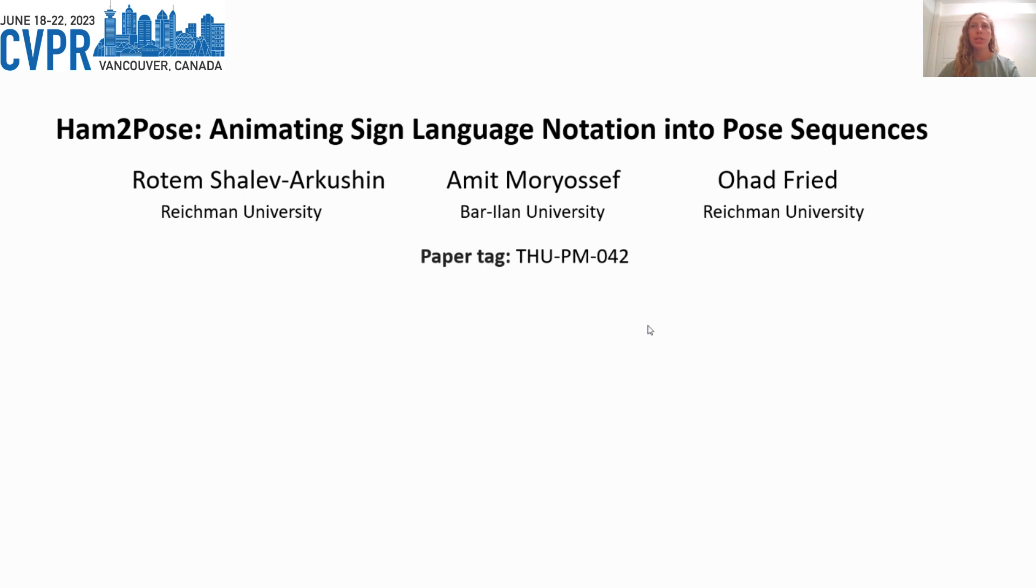HamNoSys is a generic lexical notation that allows describing any sign in any language by glyphs that describe the movement. There are glyphs that describe the hand shape, location, orientation, the movement itself, and more. Our method takes a HamNoSys sequence as input and converts it into a sequence of poses signing the relevant sign.